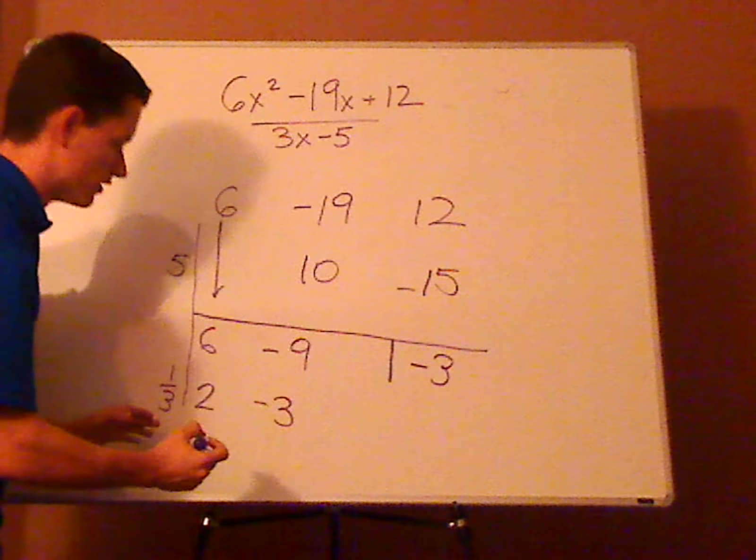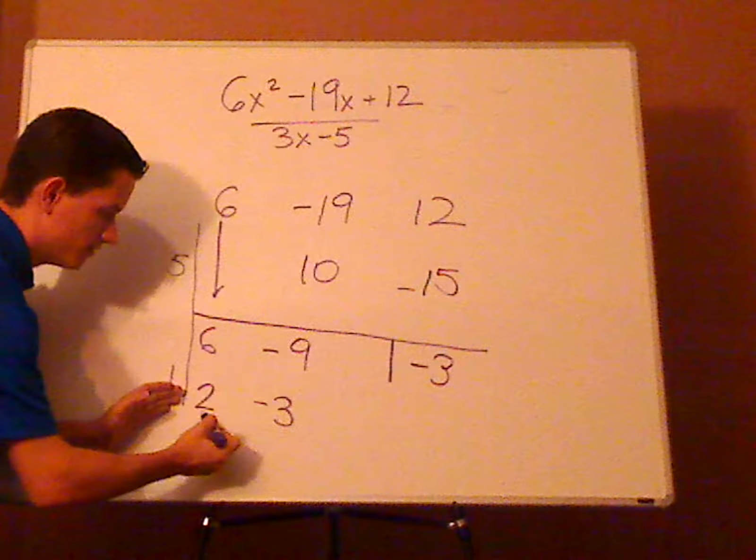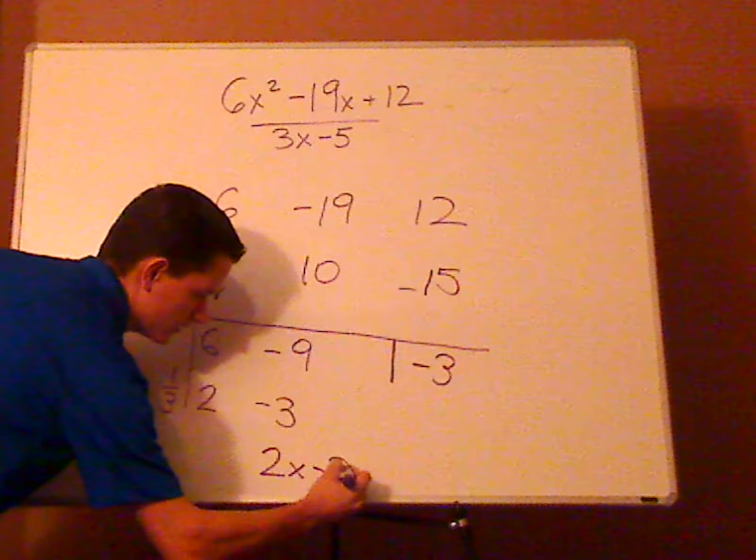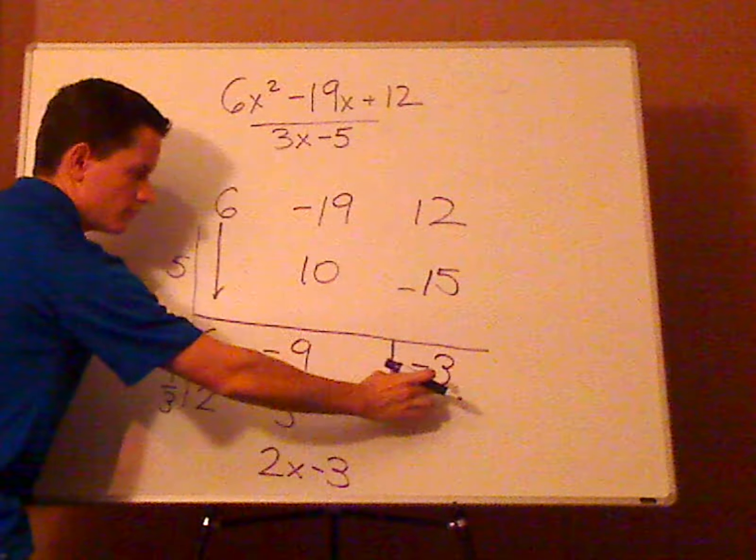So your final answer is going to be, those are the coefficients. So that would be 2x minus 3. And then here's the remainder.